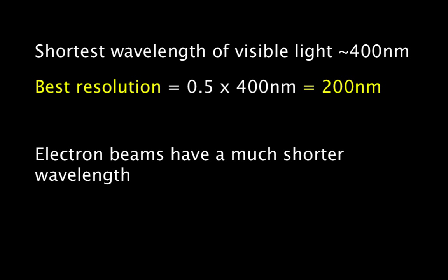Electron beams have a much shorter wavelength. Therefore, their best resolution is going to be a much shorter distance between two points. Their best resolution is 0.1 nanometres.